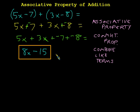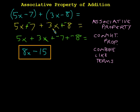Now we have a well-documented process for using the associative property, the commutative property, and combining like terms. Notice that this is a pretty good application of algebra. We'll be using this later, so we should know it's the associative property that allows us to do at least that very first step. Let's take a look at a slightly more interesting example.